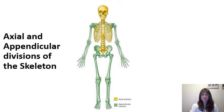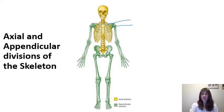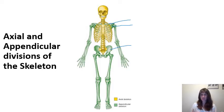Looking at the appendicular skeleton, the pectoral girdle holds the arms to the thorax — the chest. The pectoral girdle is considered part of the appendicular skeleton and includes the clavicle, which is your collarbone, and the scapula. The pelvic girdle is the part of the appendicular skeleton that holds the legs onto the axial skeleton. The pelvic girdle includes the pelvic bones, which are made up of three different portions we'll discuss later.